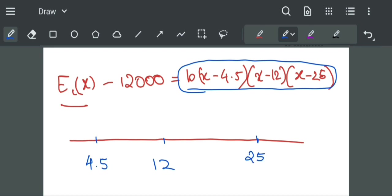By wavy curve method, the value of function will be like this. For values of x greater than 25, EL(x) minus 12,000 is positive. For x between 12 and 25, EL(x) minus 12,000 is negative.